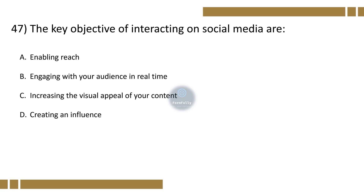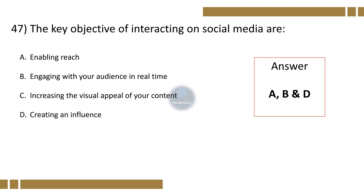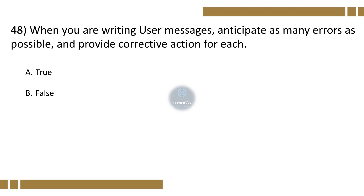Question 47. The key objectives of interacting on social media are: Option A: Enabling reach. B: Engaging with your audience in real time. C: Increasing the visual appeal of your content. Option D: Creating an influence. The correct option is A, B, and D.